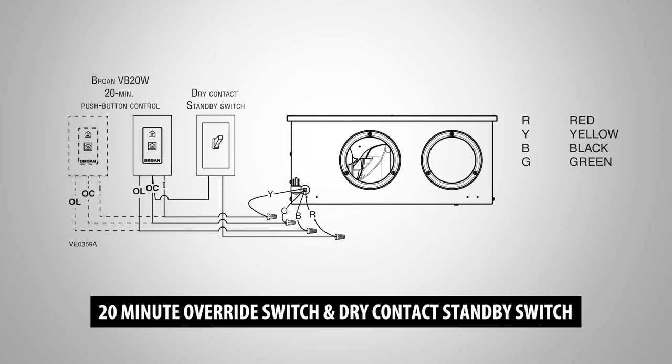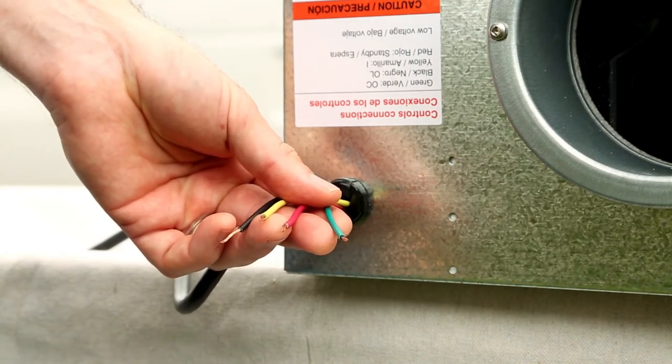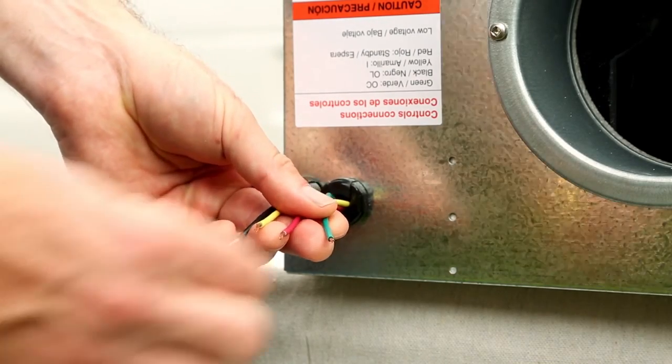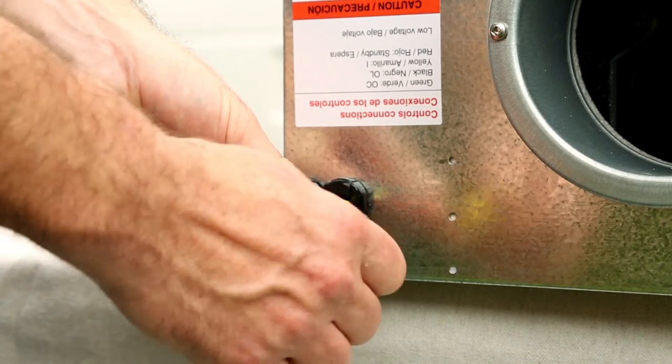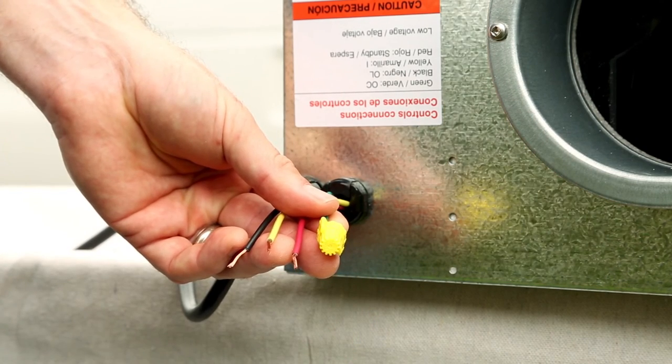Finally, the unit can be connected to a 20-minute override switch and a standby switch. This configuration allows for operation of the override switch even if the standby switch is turned on. The unit comes with red, yellow, black, and green wires. Regardless of the control configuration chosen, be sure to cap all unused wires.